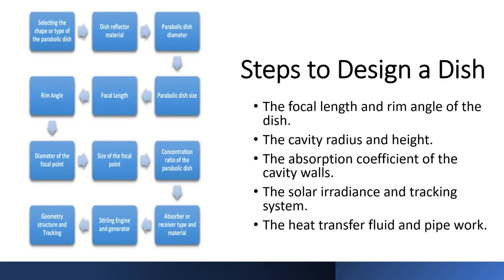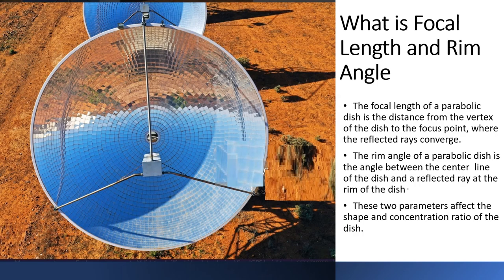Here are the important features involved in the design of a perfect dish: the focal length and rim angle of the dish, the cavity radius and height, the absorption coefficient of the cavity walls, the solar irradiance and tracking system, and the heat transfer fluid and pipework. Now I am going to explain these steps one by one.